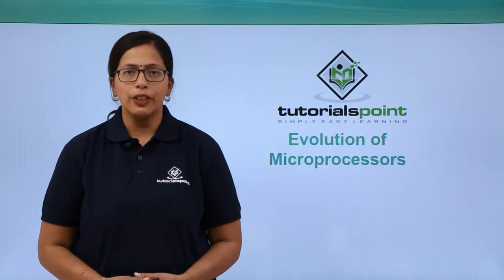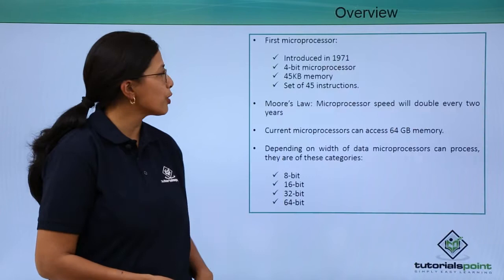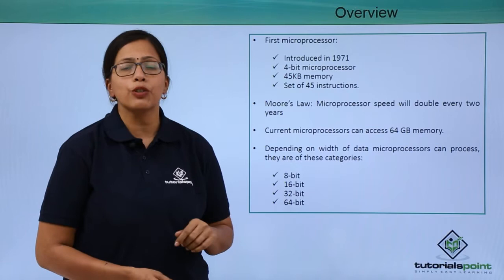In this video, we are going to see how the microprocessor has evolved since the first microprocessor was introduced in 1971. It was just a 4-bit microprocessor — that means its word size was 4-bit.